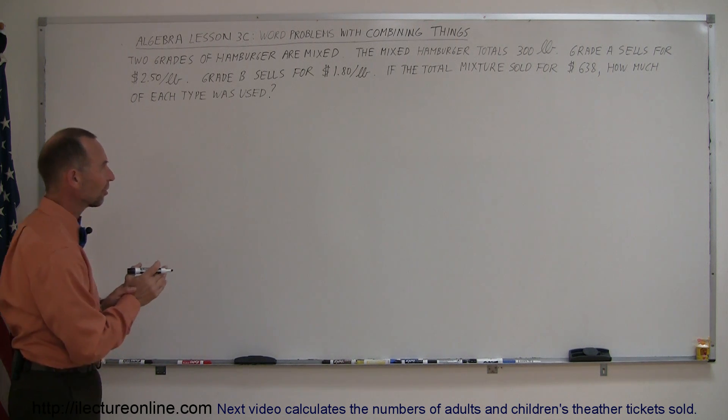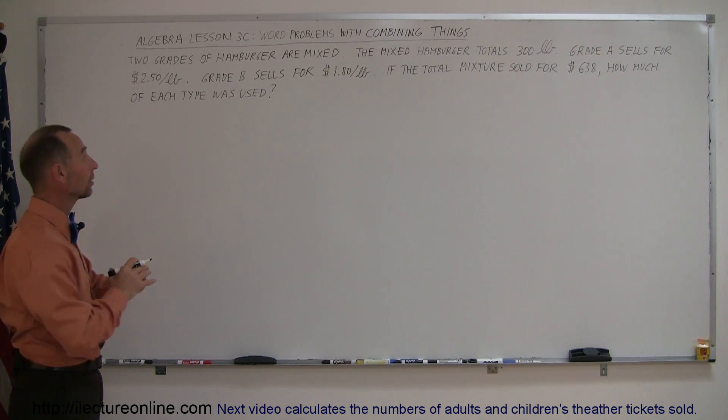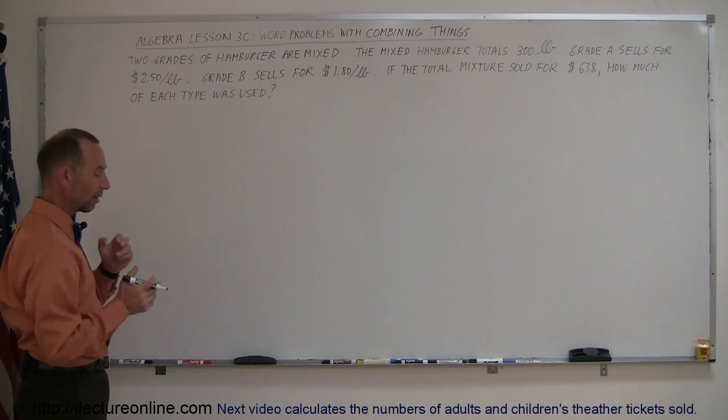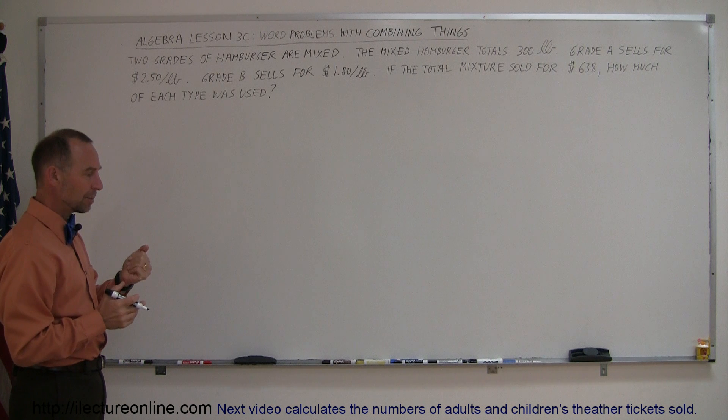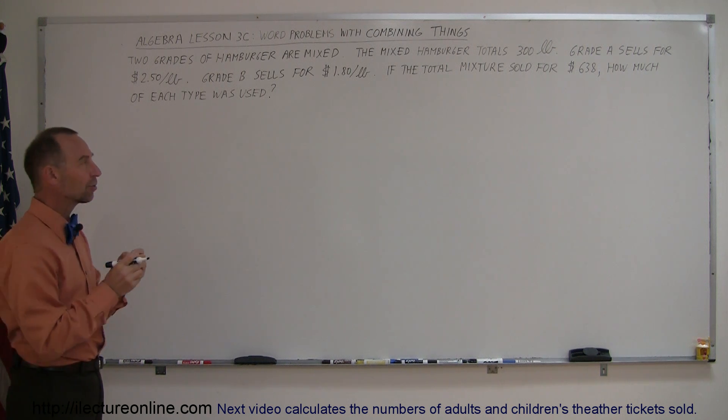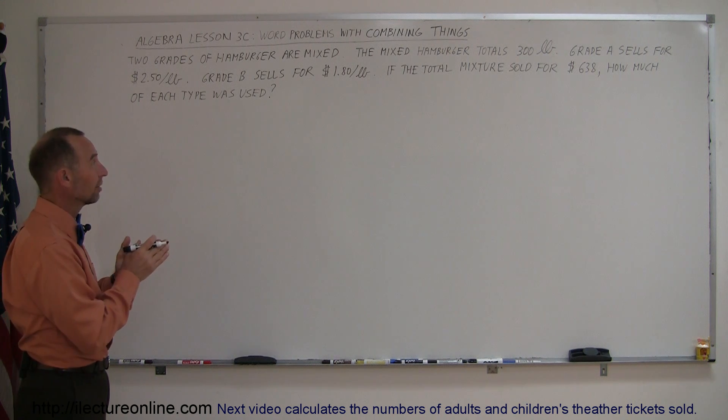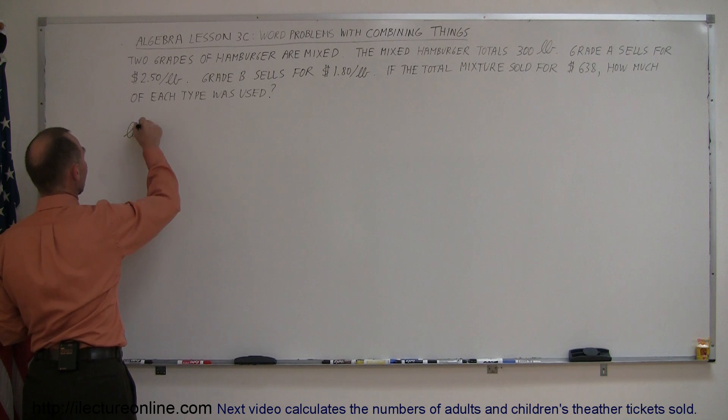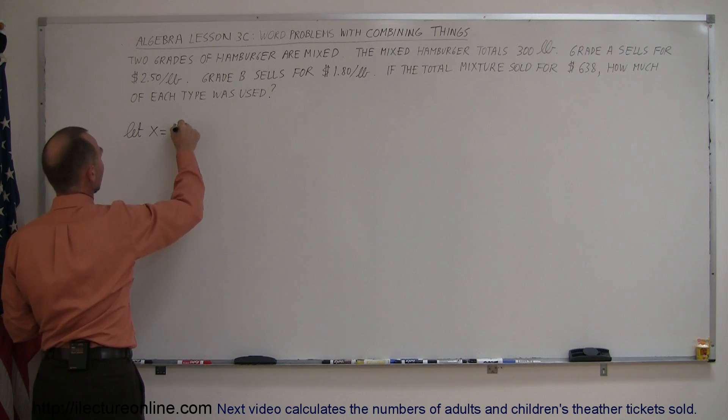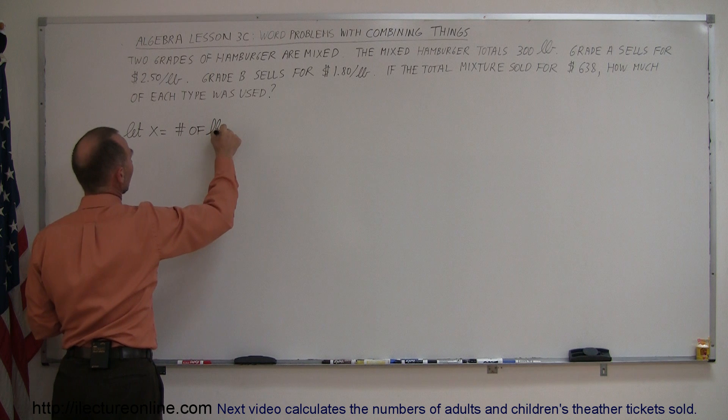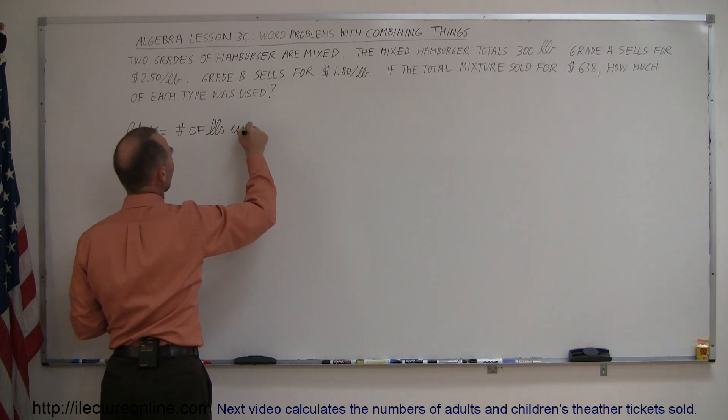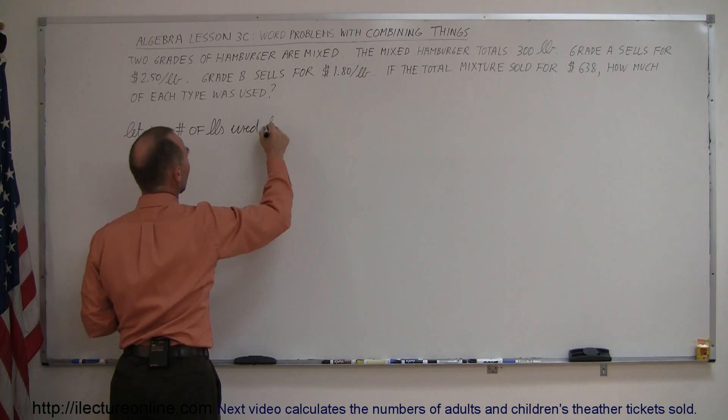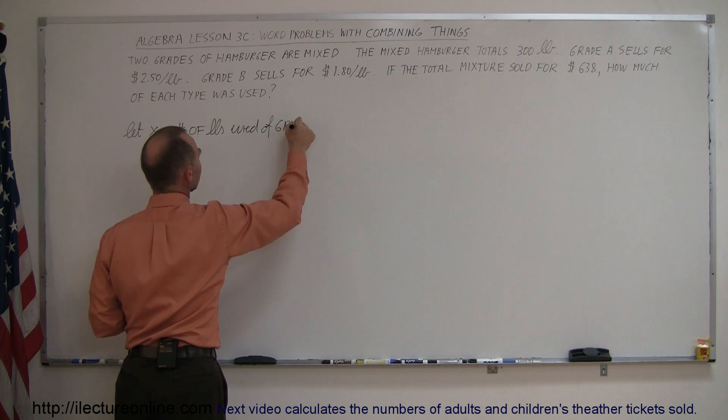This is much like a mixture problem, done a little bit differently, so let me show you the best way to go about it. So I have two types of hamburger, grade A, grade B, and we're trying to find how many pounds of each were used. You're going to let X represent the amount of pounds for one of the two, so let X equal the number of pounds used of grade A hamburger.